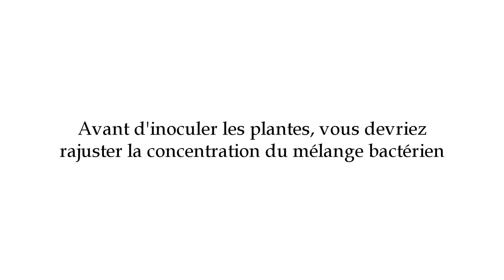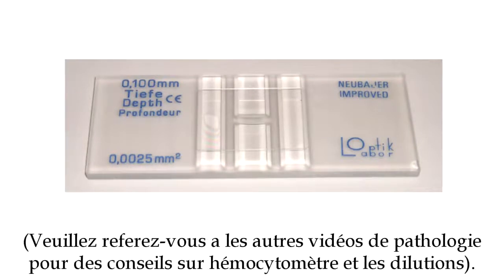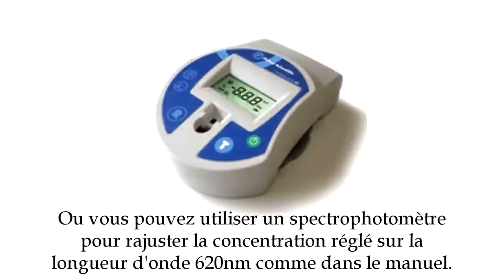Before inoculating the plants, you will need to adjust the cell concentration of the bacterial mixture. To do this, you will either need a hemocytometer, which you will use to adjust the concentration to 5×10⁸ cells per ml, or you may use a spectrophotometer to adjust the concentration to a wavelength of 620 nanometers, as shown in the manual.